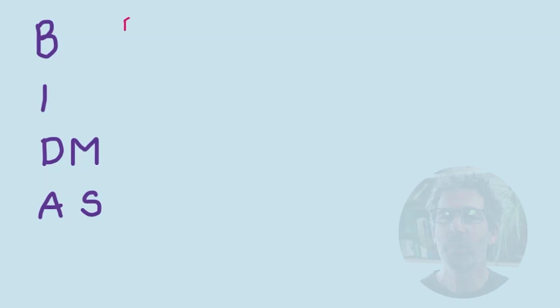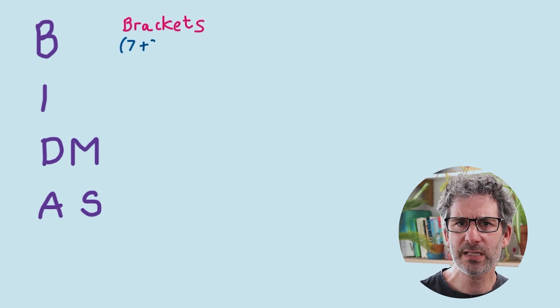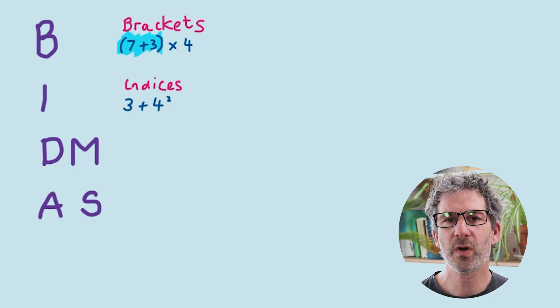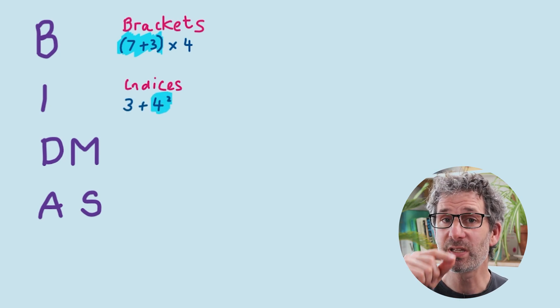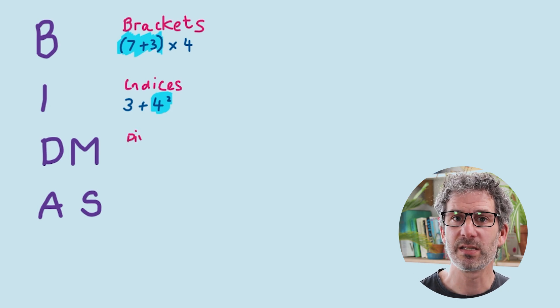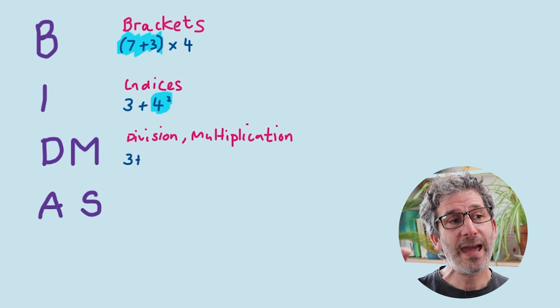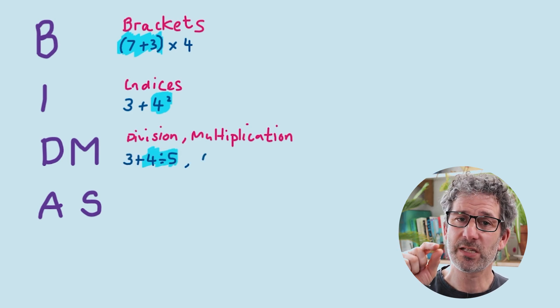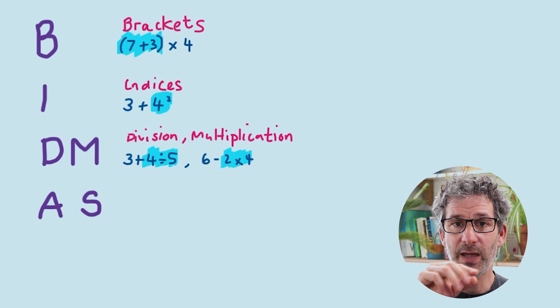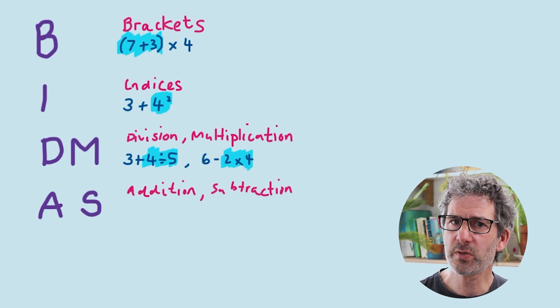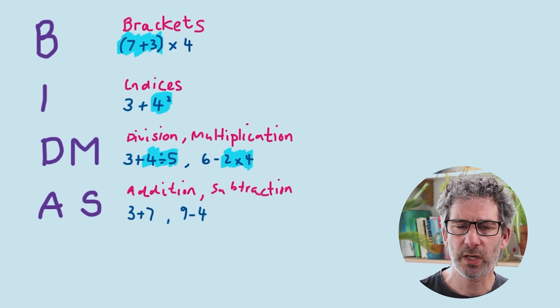So if we don't just work from left to right, how can we know the correct order in which we should do things? Well, that's where BIDMAS comes in. It stands for Brackets, Indices — that's powers of numbers, like 3 squared or 5 to the power of 4; those little numbers are the index numbers. Then we've got Division and Multiplication — they have equal importance, that's why the D and M are together. And it's the same for Addition and Subtraction. I'm going to do a few examples later on that will illustrate that.